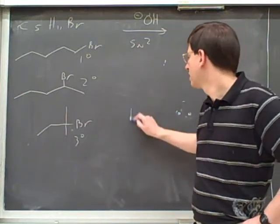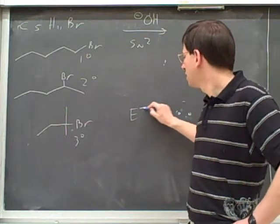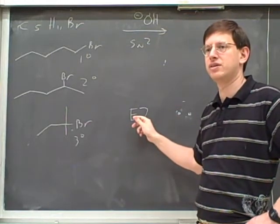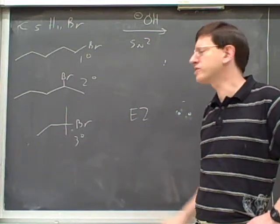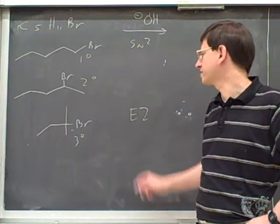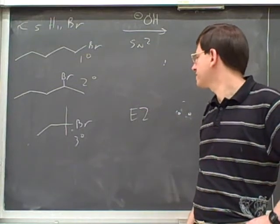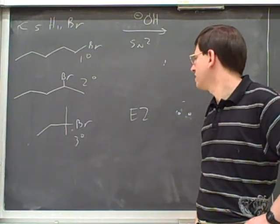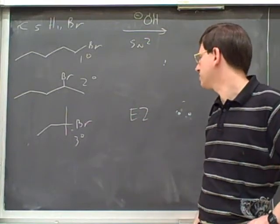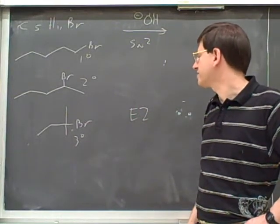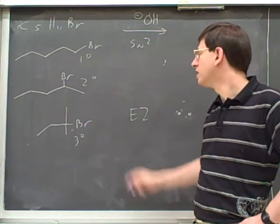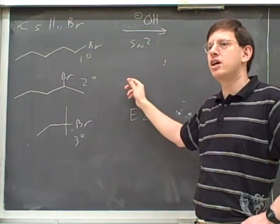Why would we expect the tertiary substrate can't do SN2? Steric hindrance. What was the big obstacle to SN2 reactions? Steric hindrance — it blocks the nucleophile. But steric hindrance is not a big obstacle to E2. So if there's a lot of steric hindrance, we expect E2. If there's less steric hindrance, we expect SN2.